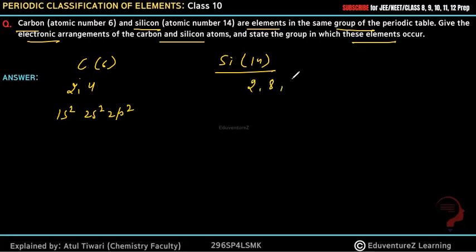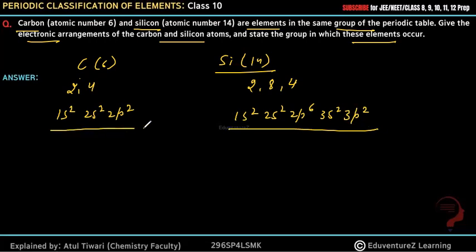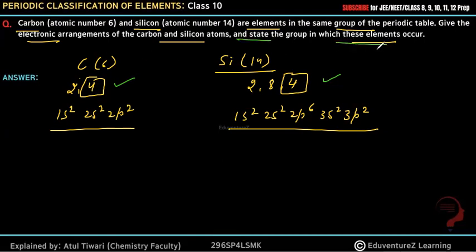Silicon's electronic configuration is 2, 8, 4 — subshell-wise: 1s² 2s² 2p⁶ 3s² 3p². Both Carbon and Silicon have 4 electrons in their outermost shell, which is why they belong to the same group. Their properties are also almost the same.